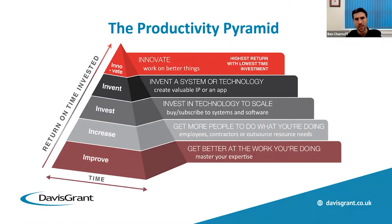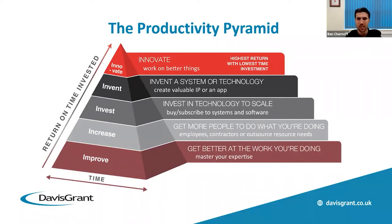Step four is about seeing if there are any systems or technology that you can invent and create your own IP. Davis Grant is involved in a lot of R&D claims, and a lot of those involve businesses that have looked at the market, found two products that don't quite do what they need, and have created their own product. Or you've got one system here and another system with nothing that links them, and you're creating your own technology to link them — and that is all claimable under an R&D claim. You might want to integrate Xero with a time management or stock management solution, effectively inventing the way those systems talk to each other. You might not have developers internally, but if you've got the idea of how you want it to work, there are a lot of firms out there that can help you.